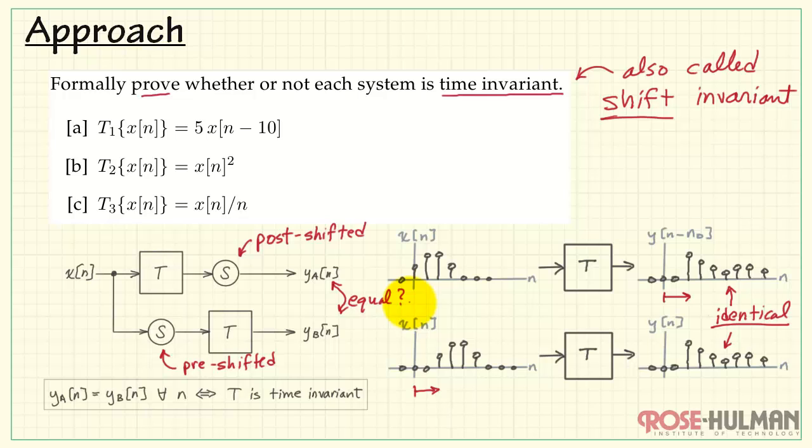If the post-shifted version and the pre-shifted version gives identical results for the output, then we say that the system is time invariant.